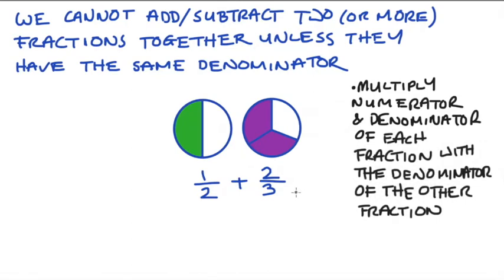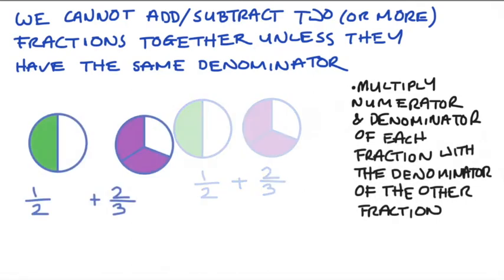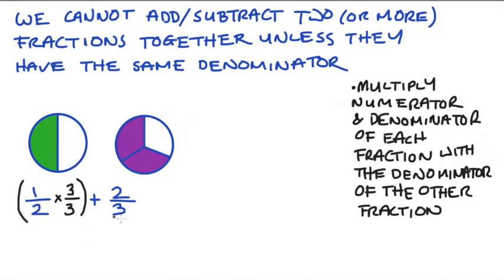So that might seem a little bit difficult, but let's just take 1 over 2, that's our first fraction. I'm going to multiply both the numerator and the denominator by the number 3, since 3 is the denominator of the second fraction. So this ends up to be 1 over 2 times 3 over 3.